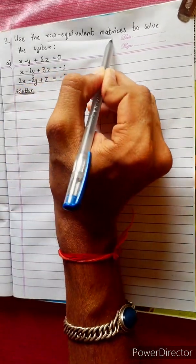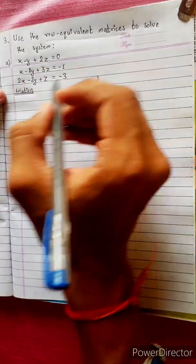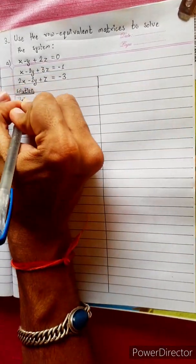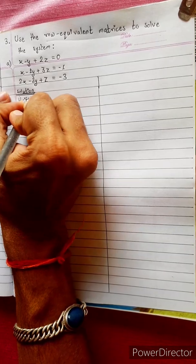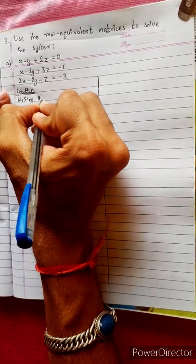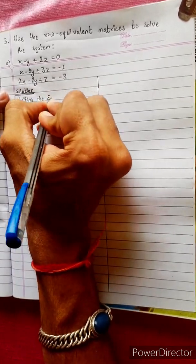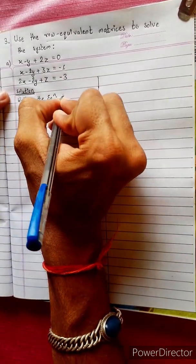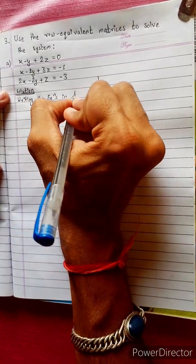Use the Row Equivalent Matrix Method. Let's start with writing the equation and the coefficients. The equations are in augmented form.